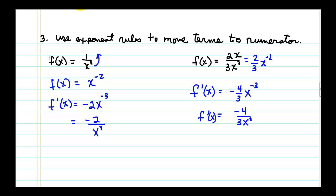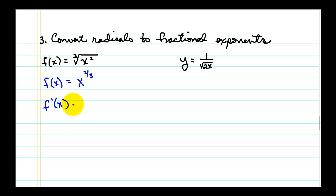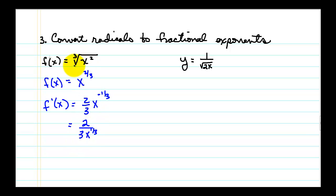Our third rewriting skill is getting rid of radical symbols. None of our derivative rules have radicals, but we can convert radicals to fractional exponents. So we rewrite the cube root of x squared as x to the 2 thirds power. Now we apply the simple power rule, subtract 1 from the exponent, and we could move the term with the negative exponent to the denominator. In calculus we often leave the answer with fractional exponents, or if the original problem used radical notation we can rewrite the final answer using radicals. Either form is correct.